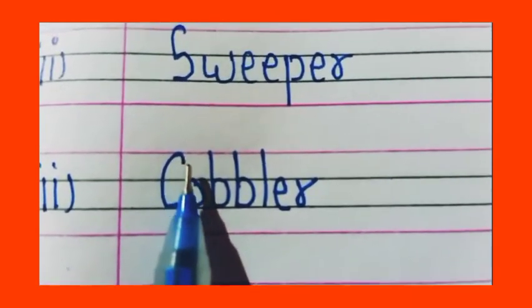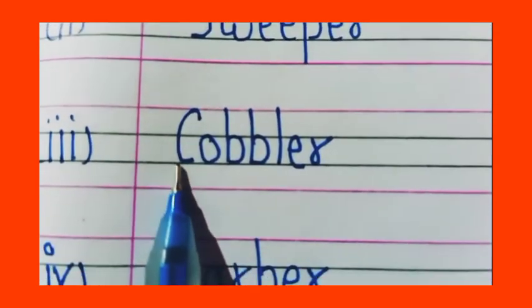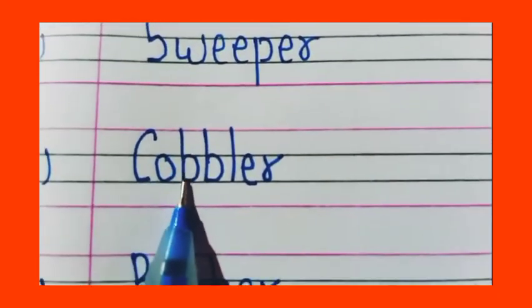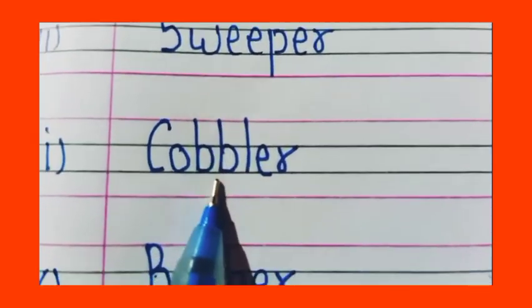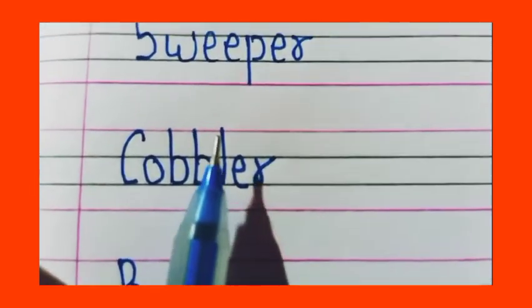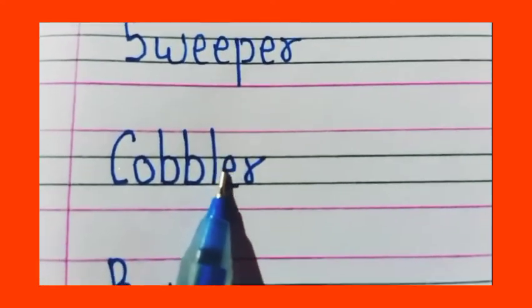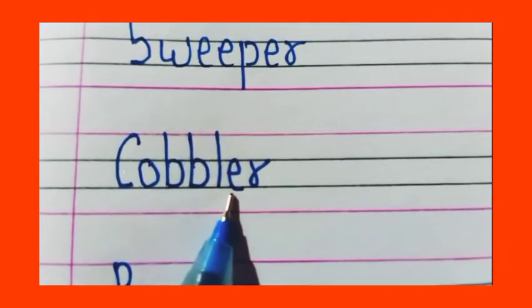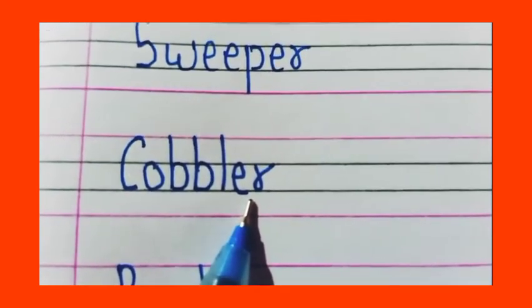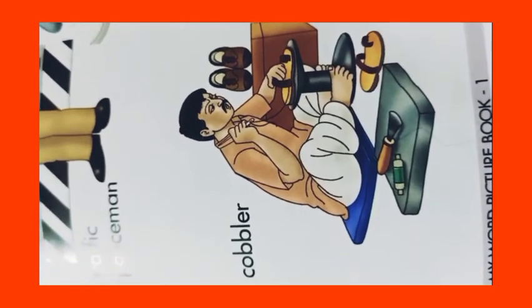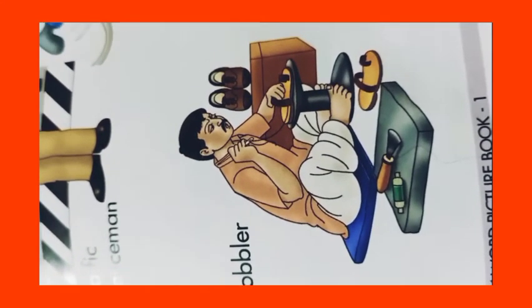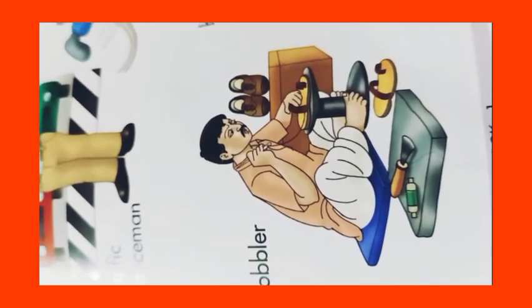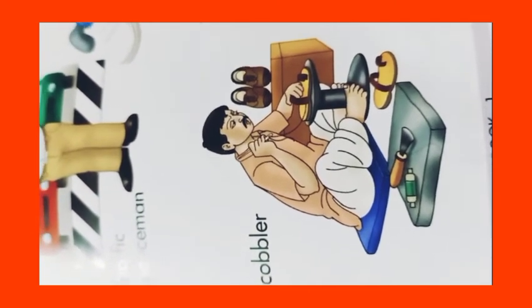Now our next word is cobbler. So his spelling is capital C, O, B, B, L, E, R, cobbler. See student, he is a cobbler, okay? What does he do? He repairs our shoes and sandals and polishes them. He is a cobbler.